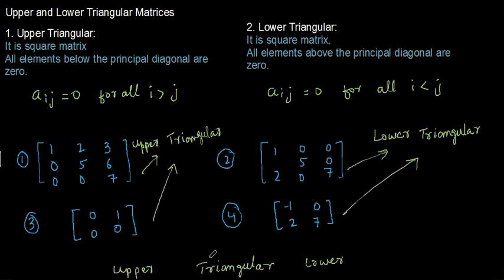A matrix is said to be a triangular matrix if it is either upper triangular or lower triangular. Thanks for watching this video. In the next lecture we will discuss algebraic operations on matrices and based on those operations, some other types of matrices. Thank you.